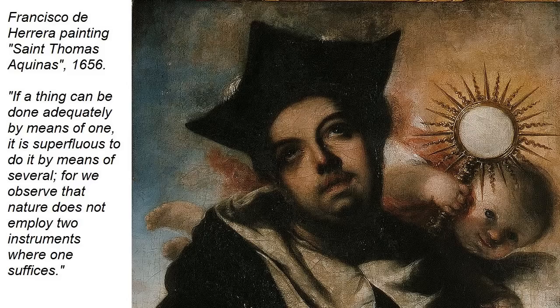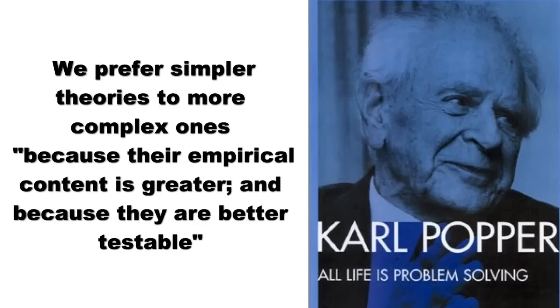This is not a new idea. Thomas Aquinas made this argument in the 13th century, writing, 'If a thing can be done adequately by means of one, it is superfluous to do it by means of several, for we observe that nature does not employ two instruments where one suffices.' As the great philosopher of science Karl Popper once said, 'We prefer simpler theories to more complex ones, because their empirical content is greater and because they are better testable.'